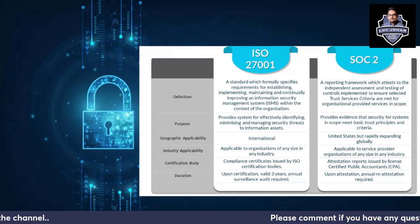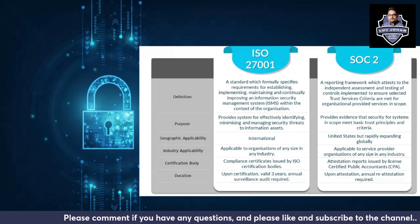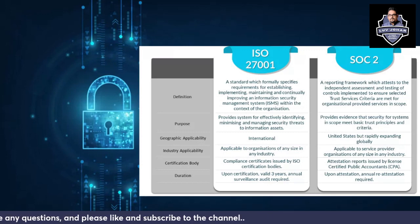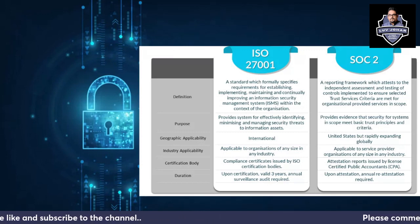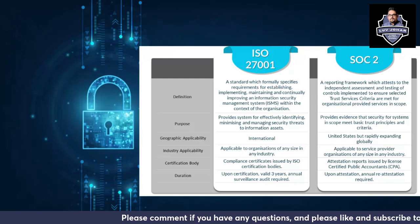The purpose of ISO 27001 is to provide a system for effectively identifying, minimizing, and managing security-related risks to information assets. SOC 2 reports provide evidence that systems in scope meet the basic Trust Services Principles and Trust Services Criteria. Geographical applicability, industrial applicability, certification body, and duration have already been discussed.